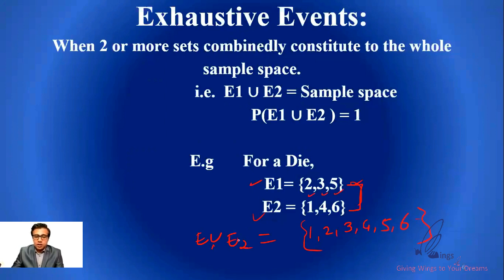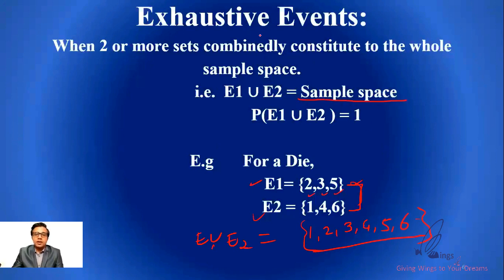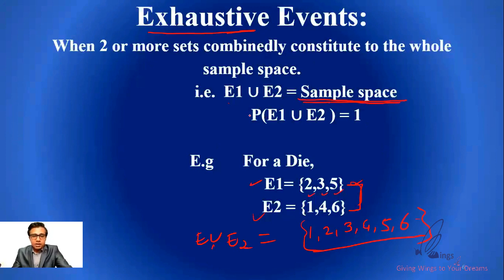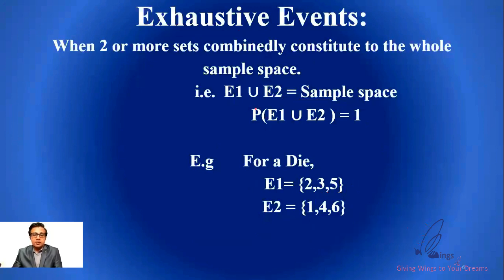When I take the union of E1 and E2, I get all possible events — the whole sample space. Because the whole sample space is covered, these two events together are called exhaustive. The word 'exhaustive' means everything is covered, nothing is remaining. So E1 union E2 must become the total sample space, and the mathematical definition is: probability of E1 union E2 equals 1.